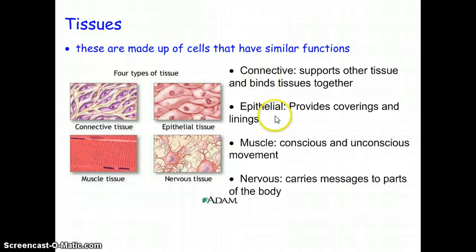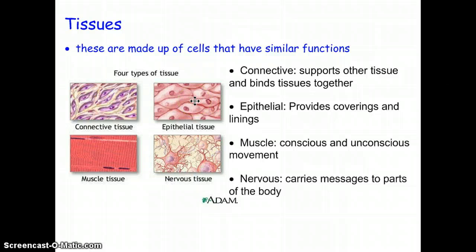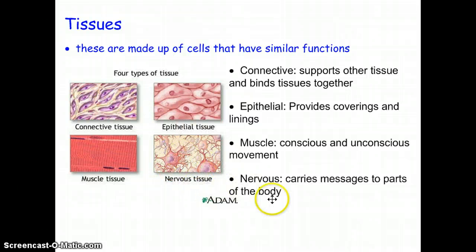Connective tissue supports other tissue and binds tissues together. When you do your dissection of your frog, you'll have to cut down the middle and peel back the skin by releasing the connective tissue connecting the skin to the muscles. Epithelial tissue provides coverings and linings — it covers all of your organs, and your skin is epithelial too. All muscles are made of long striated tissue that contracts to make the muscle contract. Nervous tissue carries messages to all parts of the body.